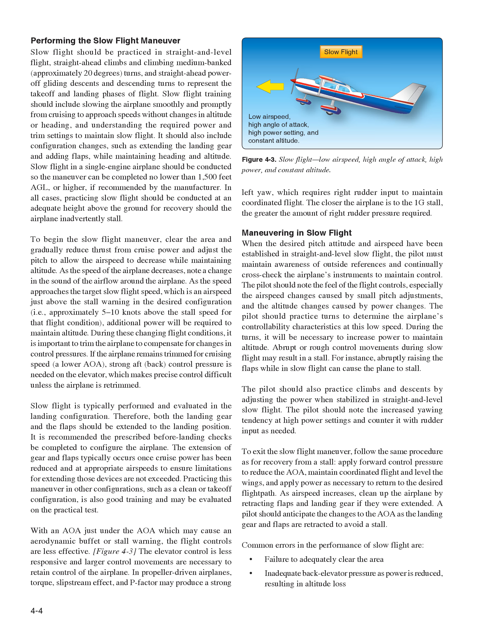In all cases, practicing slow flight should be conducted at an adequate height above the ground for recovery should the airplane inadvertently stall. To begin the slow flight maneuver, clear the area and gradually reduce thrust from cruise power, adjusting pitch to allow the airspeed to decrease while maintaining altitude. As the speed decreases, note a change in the sound of the airflow around the airplane. As the speed approaches the target slow flight speed — approximately 5 to 10 knots above the stall speed for that flight condition — additional power will be required to maintain altitude. During these changing flight conditions, it is important to trim the airplane to compensate for changes in control pressures.